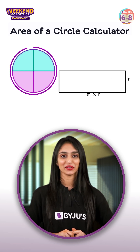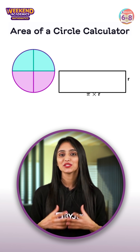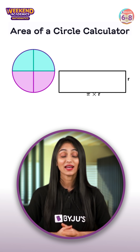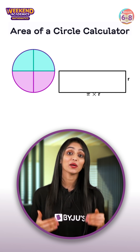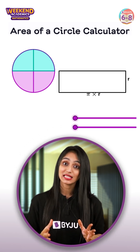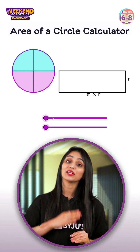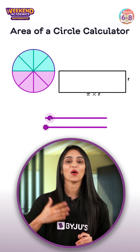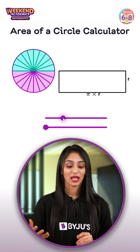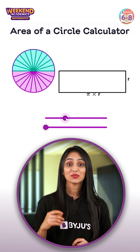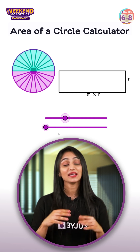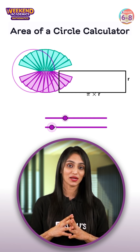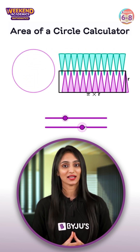Now let's get back to the circle. Let's assume that the radius of the circle is r, and we have to find out the area of the circle. First, we divide the circle into two parts and keep on dividing. The parts obtained by dividing the circle are then reassembled into a rectangle.